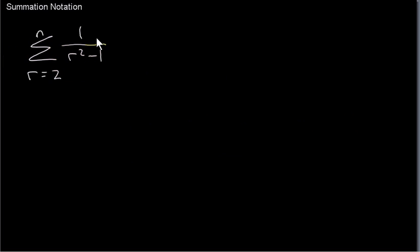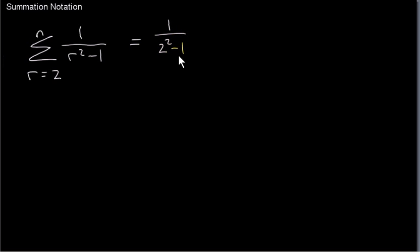The last series was arithmetic. Now let's look at a new series — we'll see that it's not arithmetic and not geometric. We start with r equals 2, plug it in, and get 1 over 2 squared minus 1. That is the first term, corresponding to r equals 2, so that's t1.